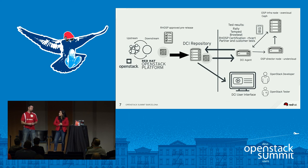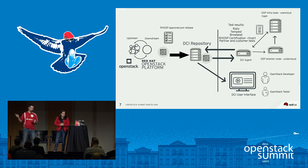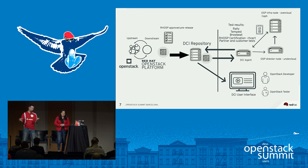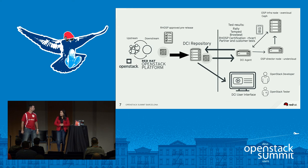For Rackspace, the most complicated part was figuring out how we were going to get director built out inside of our existing deployment process for bare metal deploys. Once we worked through that — figuring out how orchestration happens and how we keep our tools in alignment — it was very easy after that. One thing we found: getting access to Rackspace hardware was hard because they want to keep their hardware up and running 99.9% of the time.